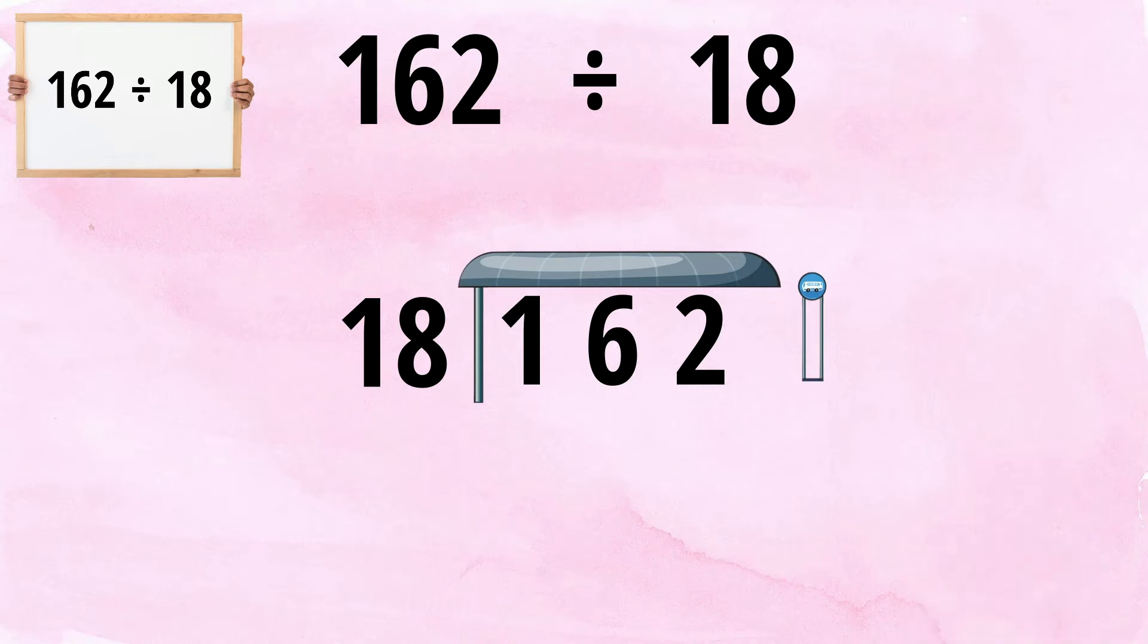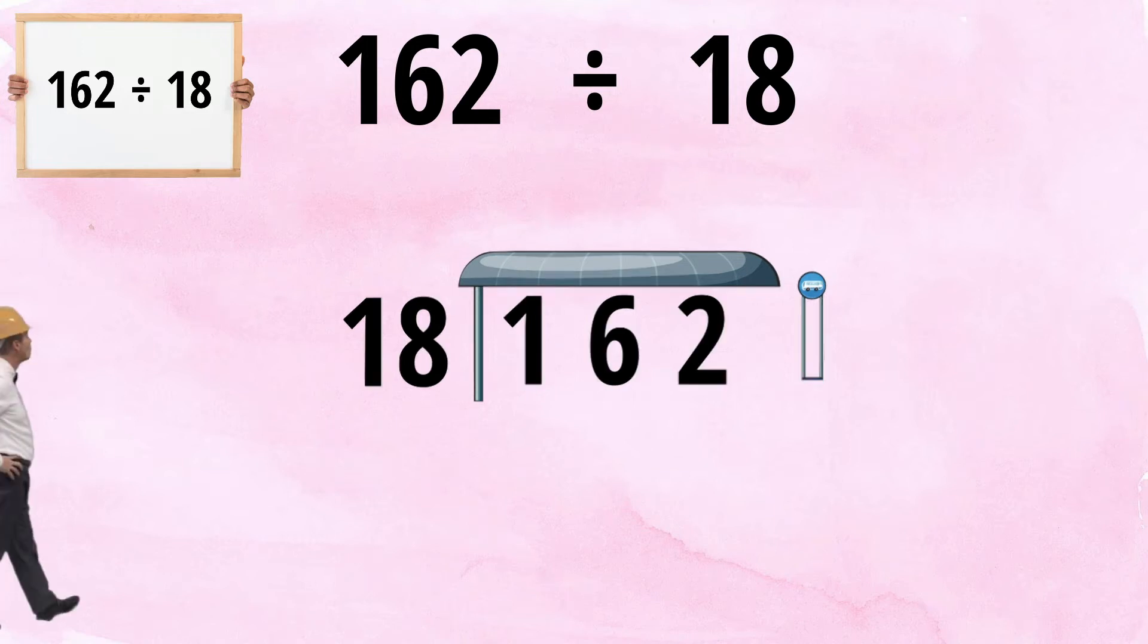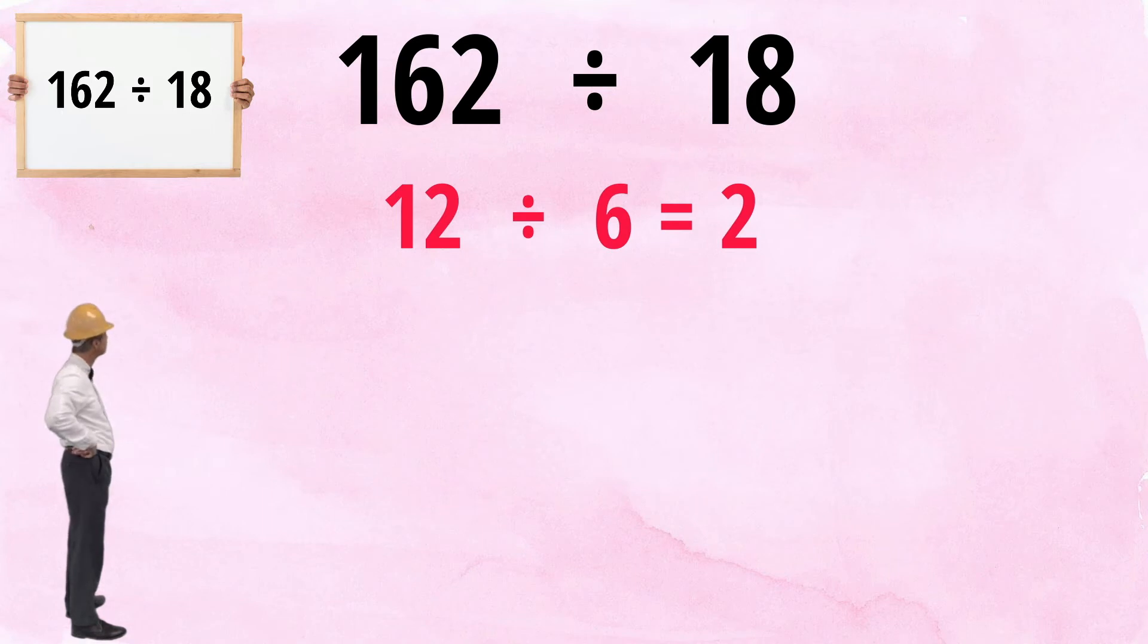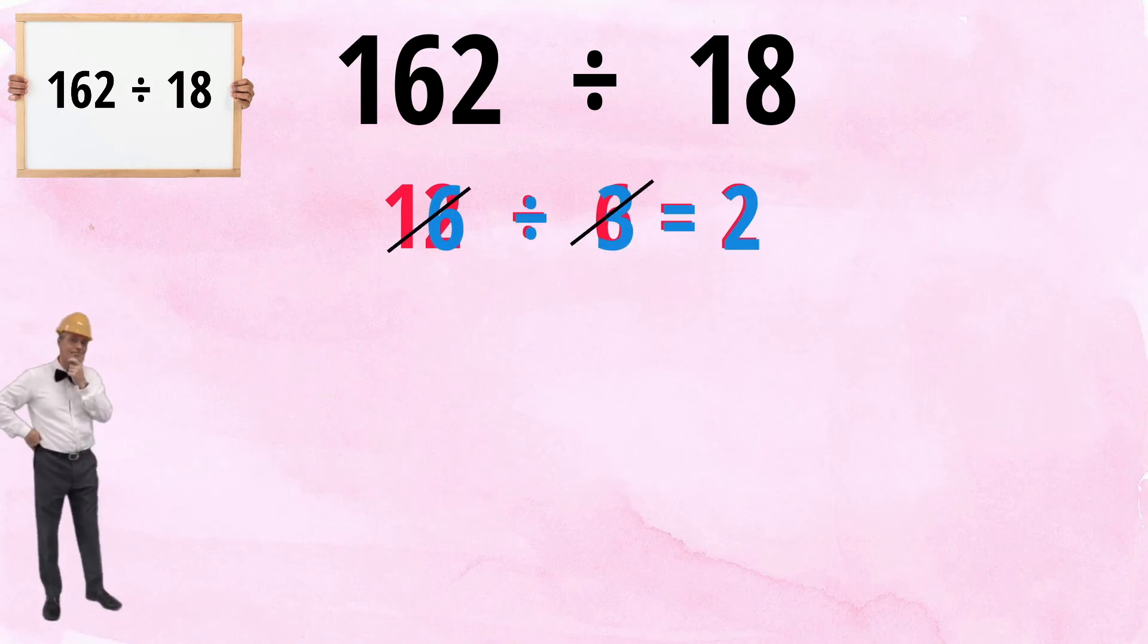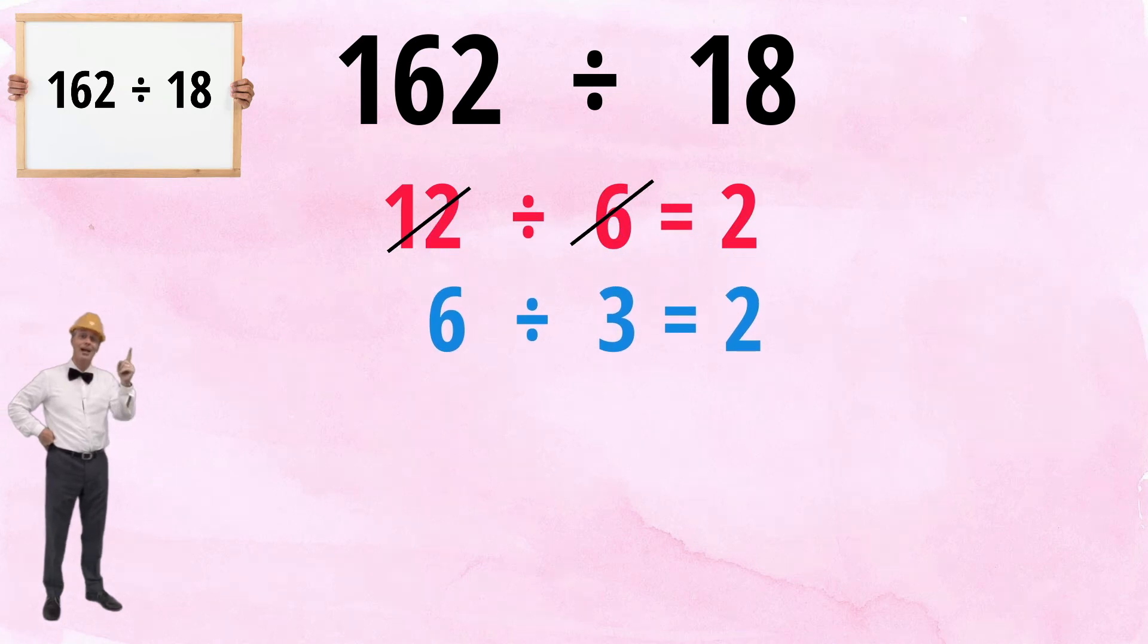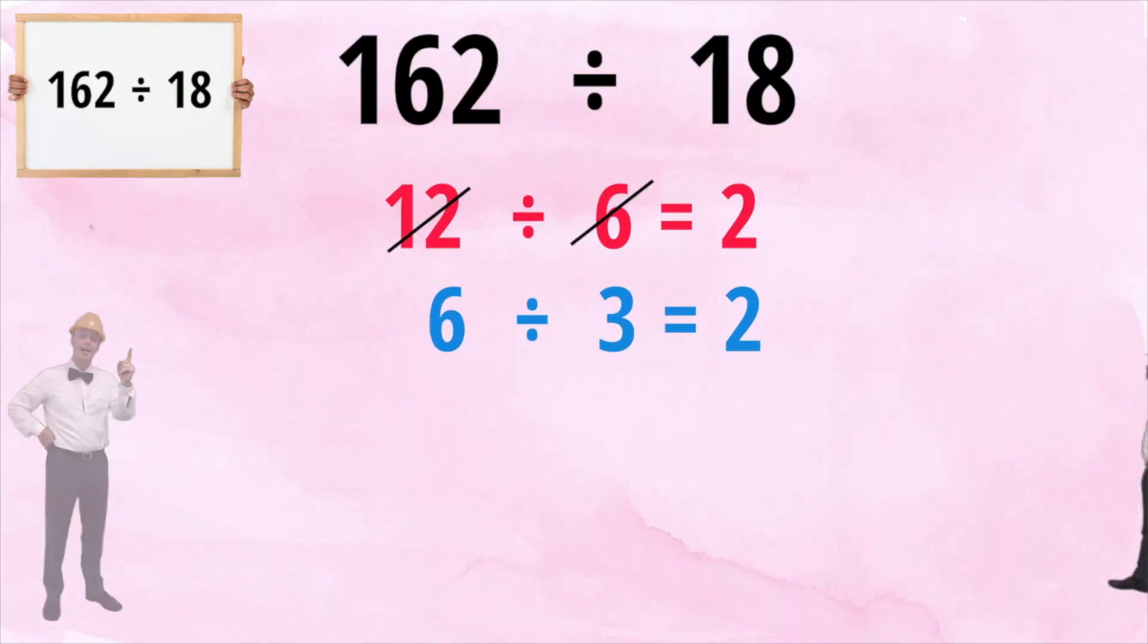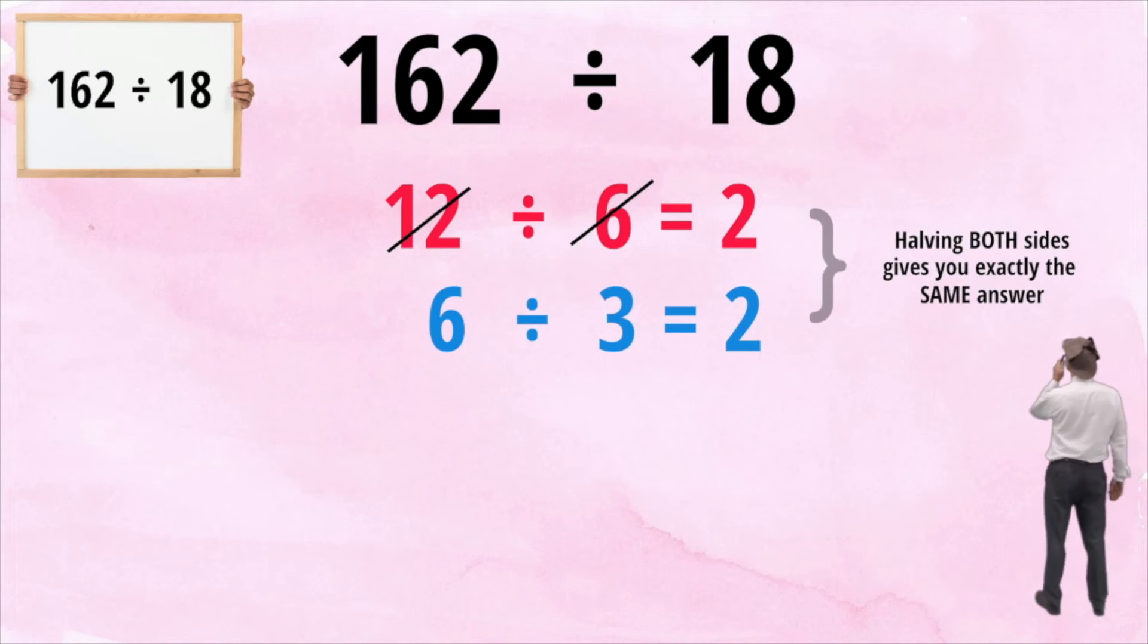Let's see how half-eiding works by using a much simpler question. 12 divided by 6 is 2. If we were to half both sides, we'd end up with 6 divided by 3, which is also 2. So halving both sides gives you exactly the same answer.